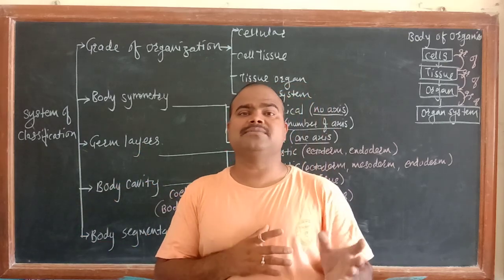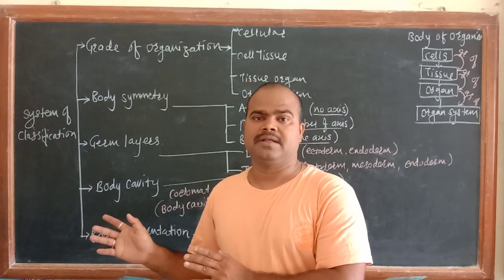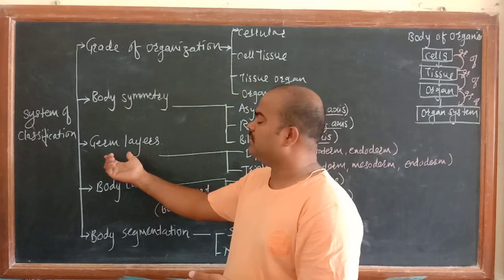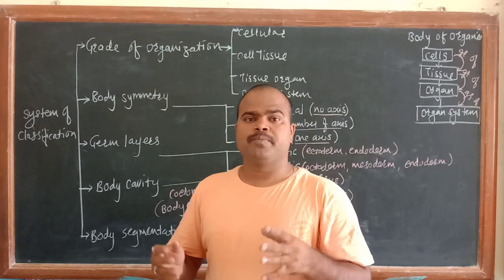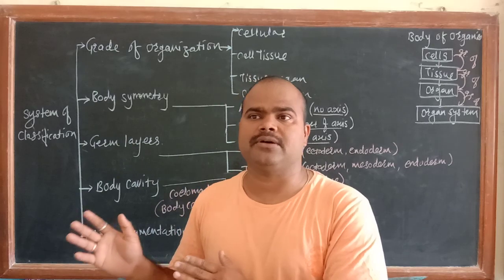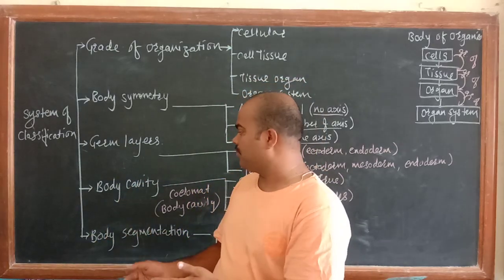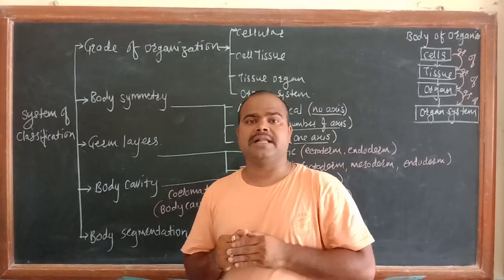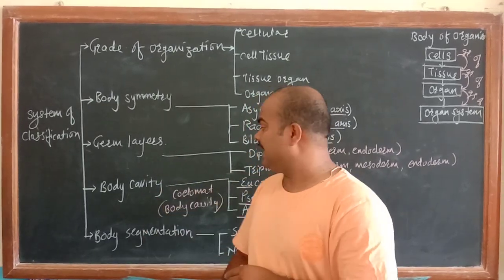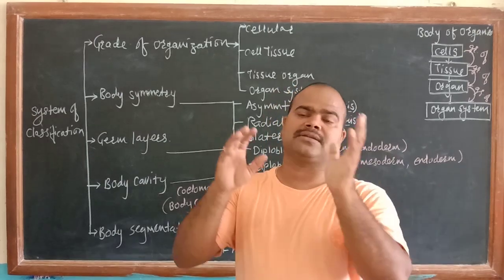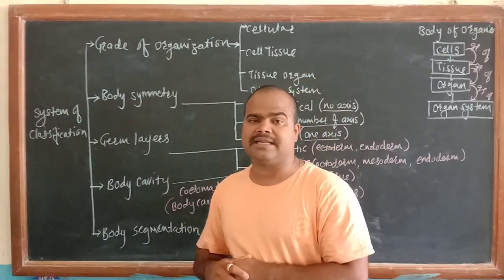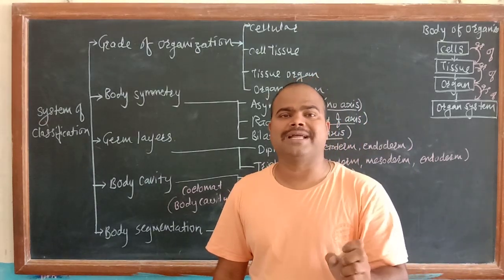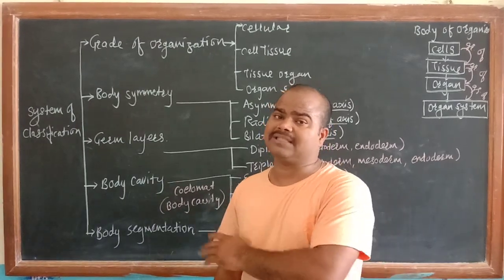Next is body cavity. In the primary stages, when the zygote is formed, body cavity is present in all animals. But once organisms are in the real scenario, body cavity is seen in some animals and not in others. This is another criteria for classification. The last one is body segmentation - a similar unit is known as a segment, and this is considered a criteria for classification.